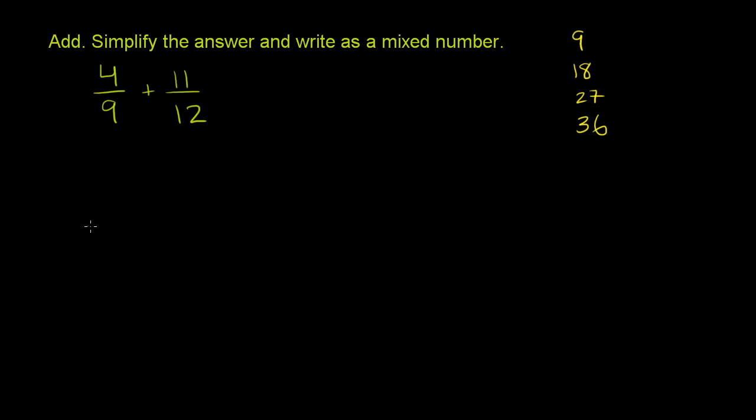So we're going to write 4/9 as something over 36, and we're going to write 11/12 as something over 36. Now, to turn your 9 into a 36, you have to multiply it by 4, right? 9 times 4 is equal to 36.